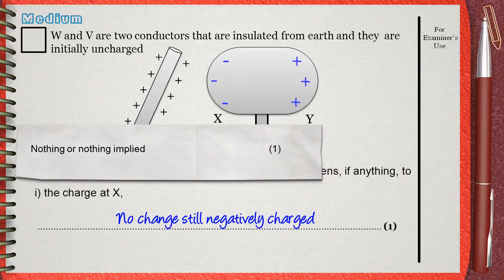The mark scheme awards one mark for the word nothing, or nothing implied. That means you can say anything that gives the meaning that nothing will happen.